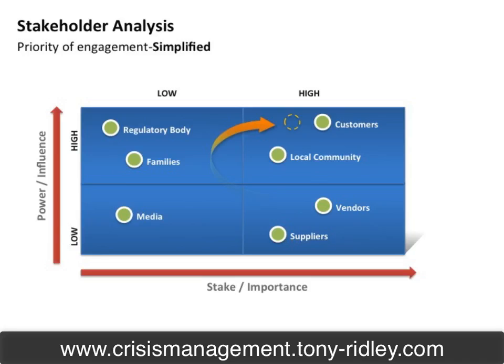Essentially, the greater the stake or the importance and the greater the power and the influence, the higher the priority we communicate with stakeholders. Stakeholders can range from external elements such as vendor suppliers, media, regulatory bodies, even local communities and customers, to internal stakeholders being departments, shareholders to a degree, families, and certainly employees or even other management — particularly if this is a multi-jurisdictional or multi-business affected crisis.